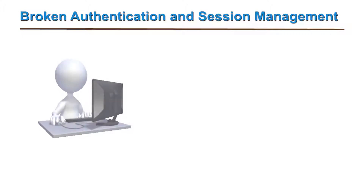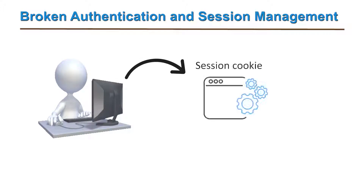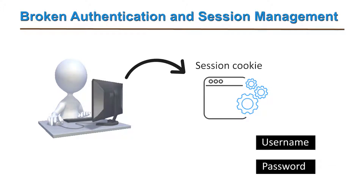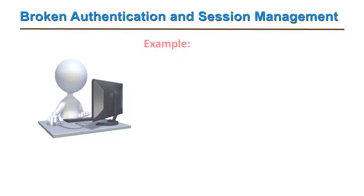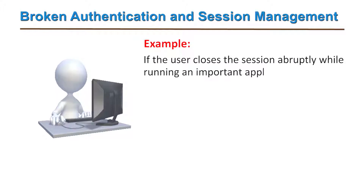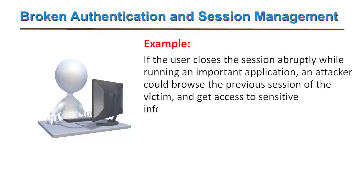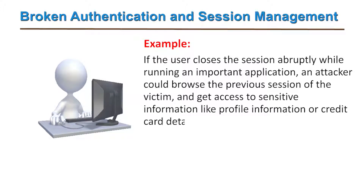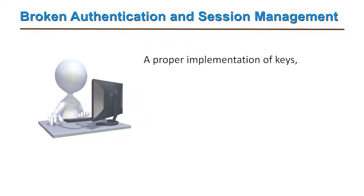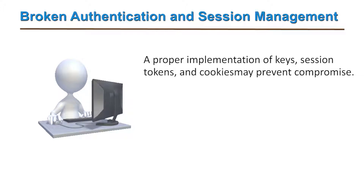The third one is broken authentication and session management. For each valid session, there is a creation of a session cookie. The session cookies contain sensitive data like the username, password, etc. These cookies are destroyed once the session is ended. For example, when using a cyber cafe, if a user closes the session abruptly while running an important application, an attacker could browse the previous session of the victim and gain access to sensitive information like profile information or credit card details. A proper implementation of keys, session tokens, and cookies may prevent such compromises.